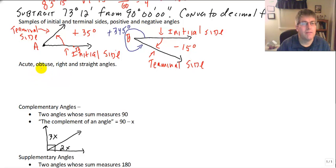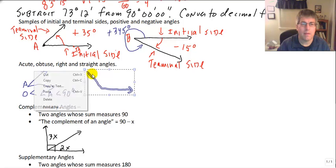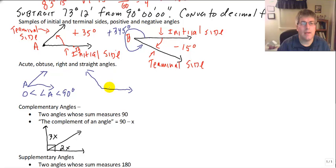You may remember from geometry we have used acute, obtuse, right, and straight angles. An acute angle is an angle that is less than 90 degrees. So our angle measure, I'm going to say angle A, if it's acute, is going to be less than 90 degrees and greater than 0 degrees.